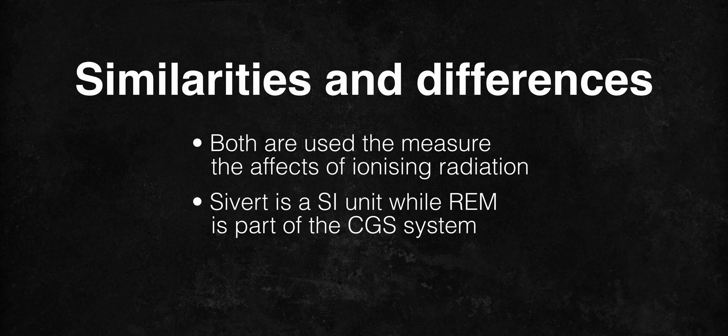Sievert is a SI unit, while rem is a part of the older centimeter-gram-second system, or CGS for short. Similarly to the case with becquerels and curies, sieverts are used in most countries around the world, while the US still sticks with rems.